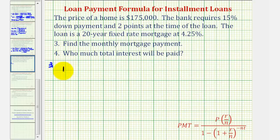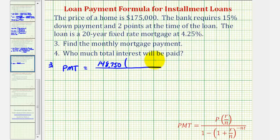So number three, the monthly payment is going to be equal to this quotient here, where P is the loan amount, which is $148,750 times R divided by N, where R is the annual interest rate and N is the number of payments per year. So since the rate is 4.25 percent expressed as a decimal, we would have 0.0425. We're making monthly payments, so N is 12. So here's the numerator.